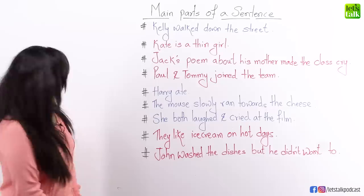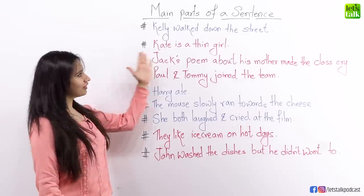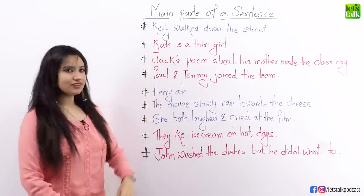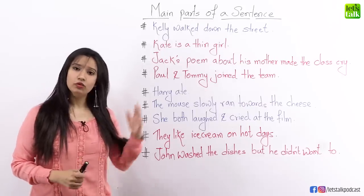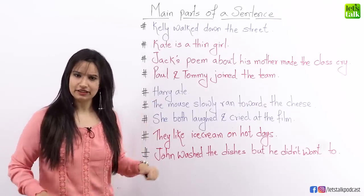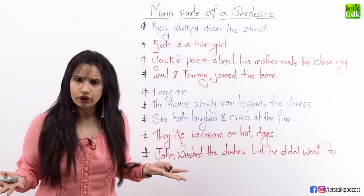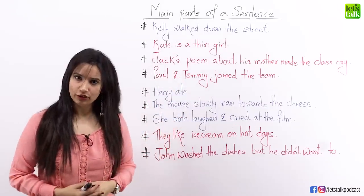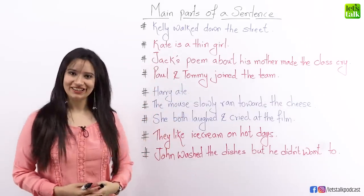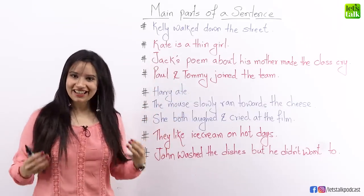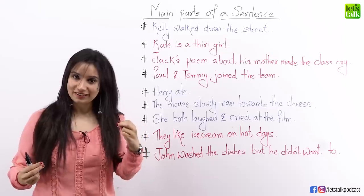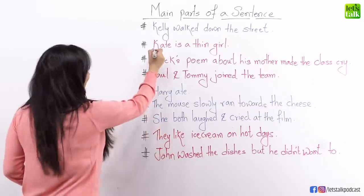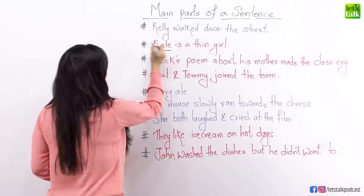Let's look at the first sentence we have in red: Kate is a thin girl. What question can you form for this sentence? You could say, who is a thin girl? The answer would be, Kate is a thin girl. So what is Kate here? Kate is the subject, because it's answering the question 'who.'